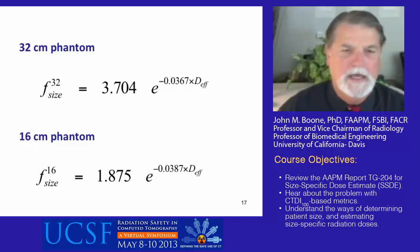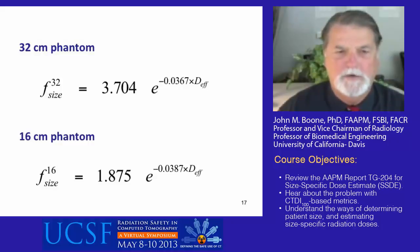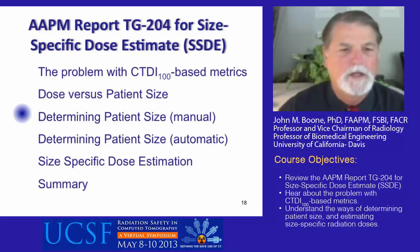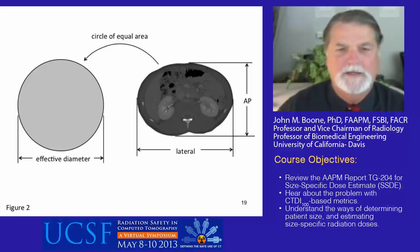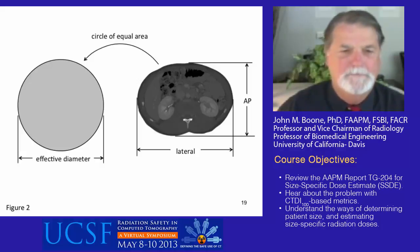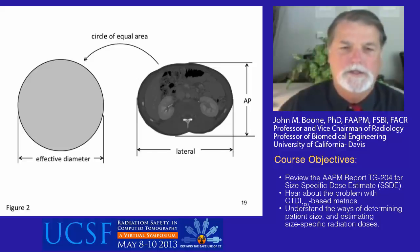Because it's analytic, the exponential function makes it easy for software vendors to code once you know the effective diameter or the water-equivalent diameter. In terms of determining patient size manually, a CT scout image has a certain area, and we treat the effective diameter as a circle with the equivalent area. Other parameters we can use are the AP dimension, the lateral dimension, and the sum of these two values.